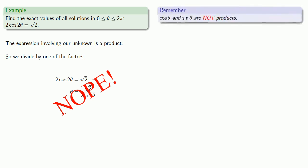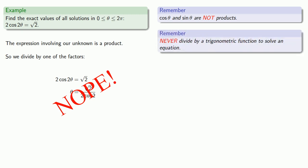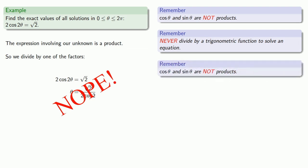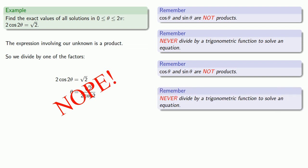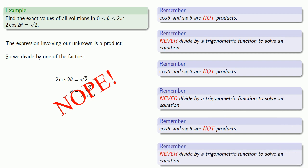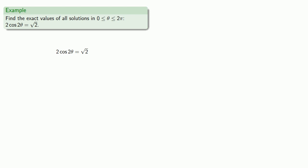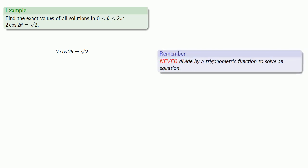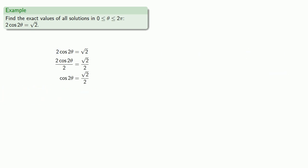First: cosine(θ) and sine(θ) are not products, so we should never divide by a trigonometric function to solve an equation. Second: cosine(θ) and sine(θ) are not products, so never divide by a trigonometric function to solve an equation. And most importantly: cosine and sine are not products, and you should never divide by a trigonometric function to solve an equation. We do still have a product — it's 2 times cosine(2θ) — so we divide by 2, giving us cosine(2θ) = √2/2.